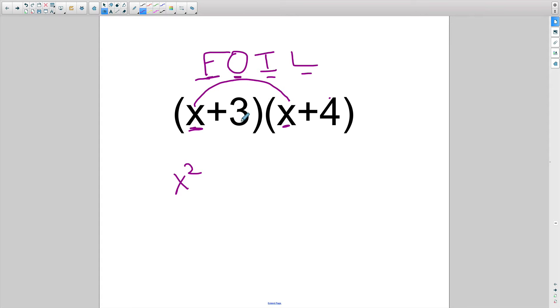Then we're going to go to the outer. That's going to be the outer points, the x and the 4. Well, x times 4, a positive 4, is plus 4x.